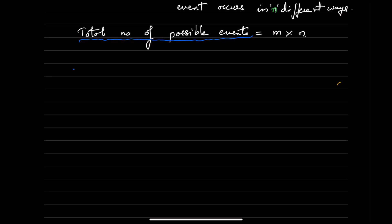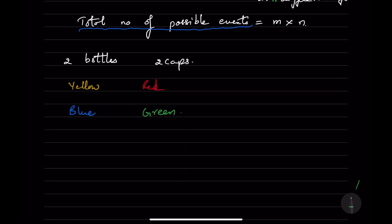Let's take an example to determine the number of all possible arrangements for permutations. Suppose we are taking two colored bottles — yellow and blue — and two caps — red and green. How do we arrange them? For the yellow bottle you can put a red cap or a green cap. For the blue bottle you can put a red cap or a green cap. So these are all the possible arrangements from the two given objects.